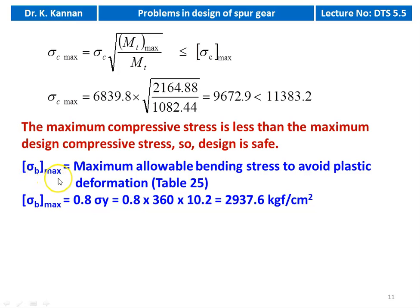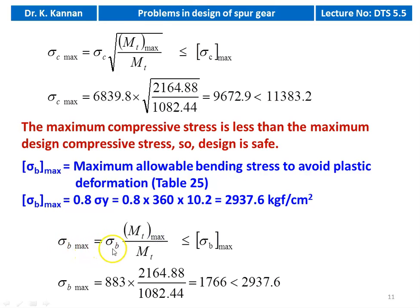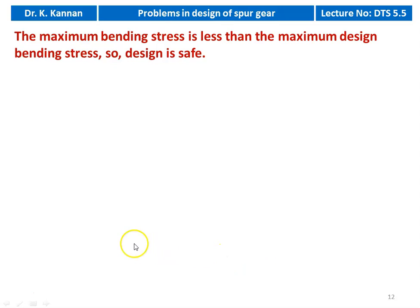Maximum design bending stress: maximum allowable bending stress to avoid plastic deformation from table 25, page 8.19: σb_max = 0.8 × σy = 0.8 × 360 × 10.2 = 2,937.6 kgf/cm². Actual maximum: σb_max_actual = 883 × (2,164.88 / 1,082.44) = 1,766 kgf/cm², which is less than 2,937.6. Design is safe.